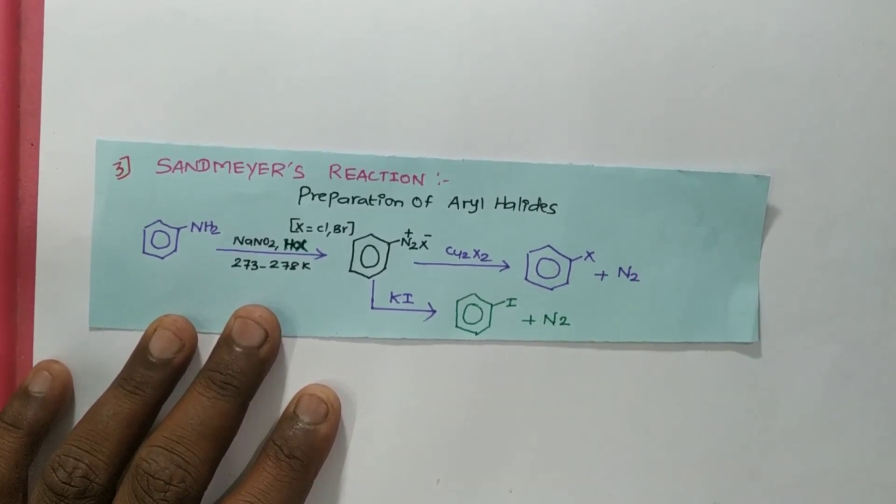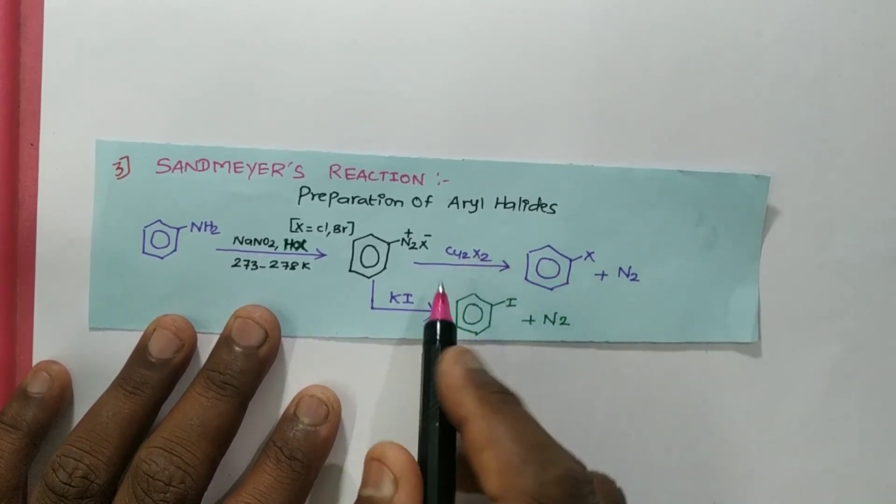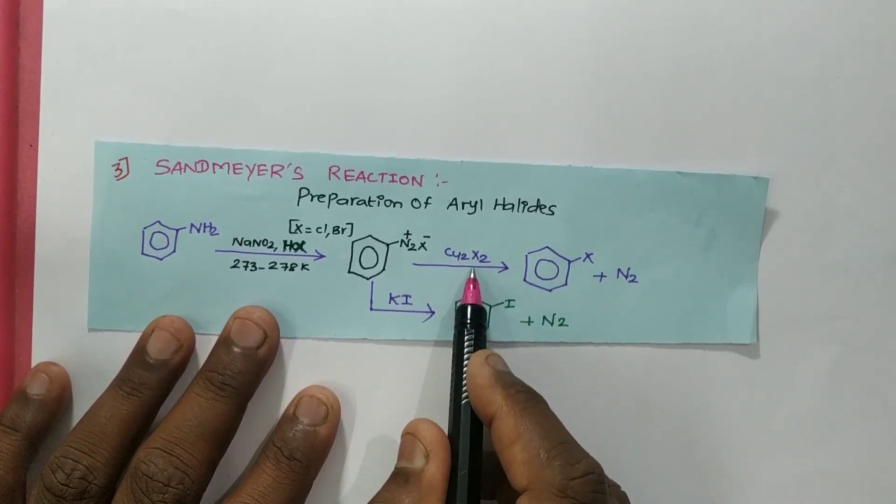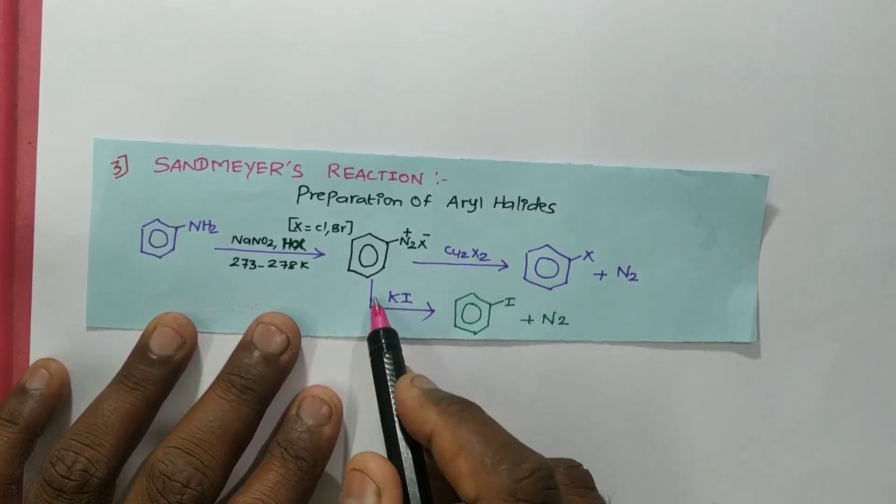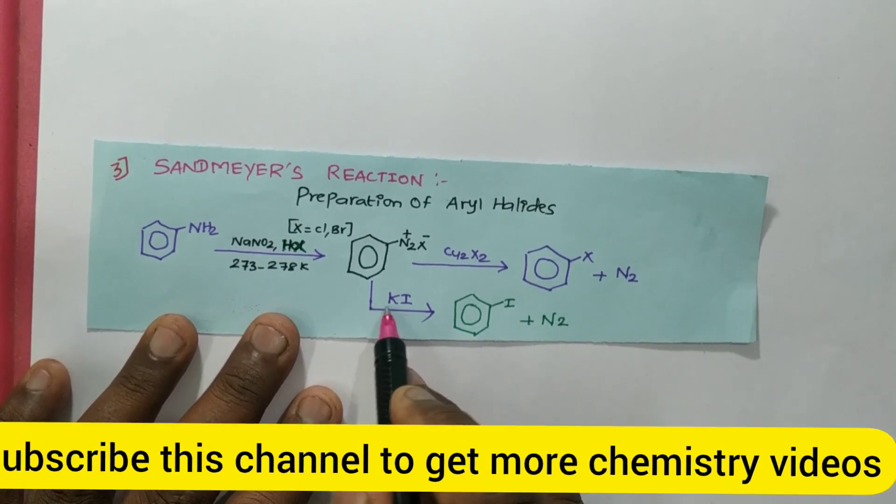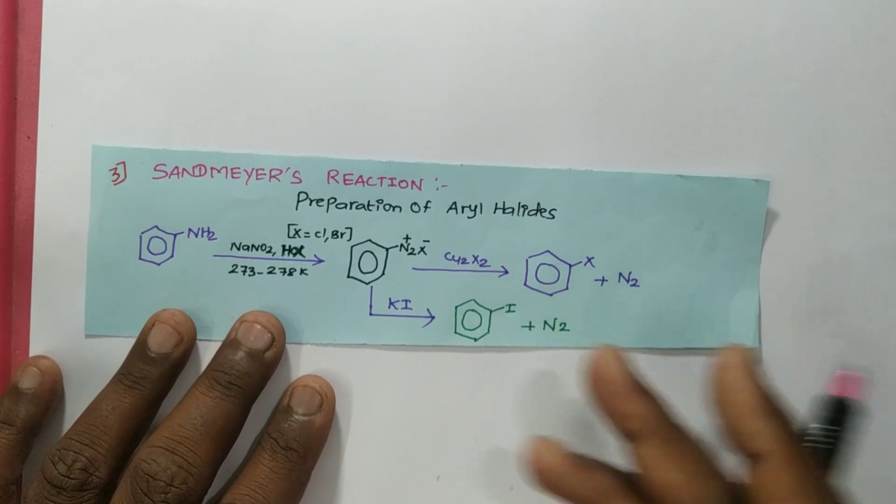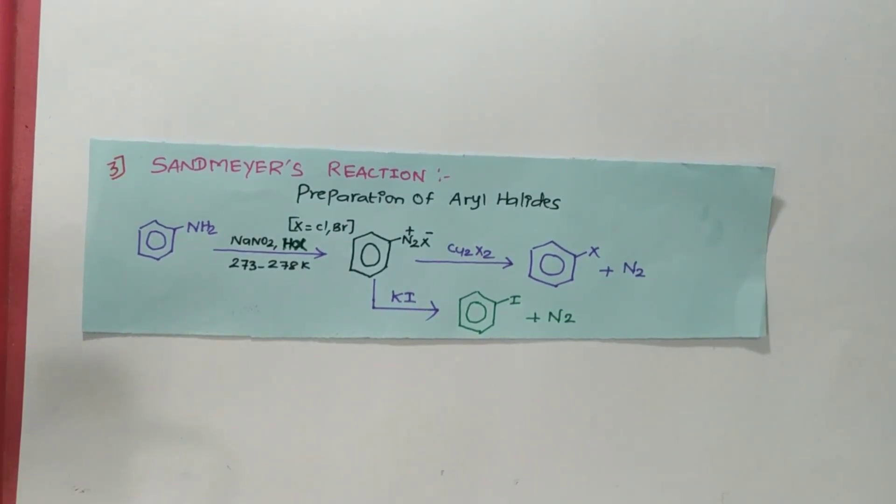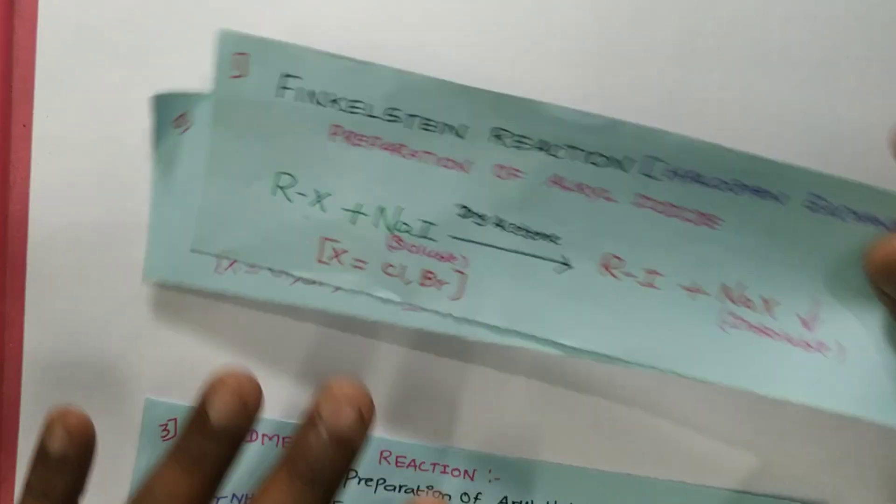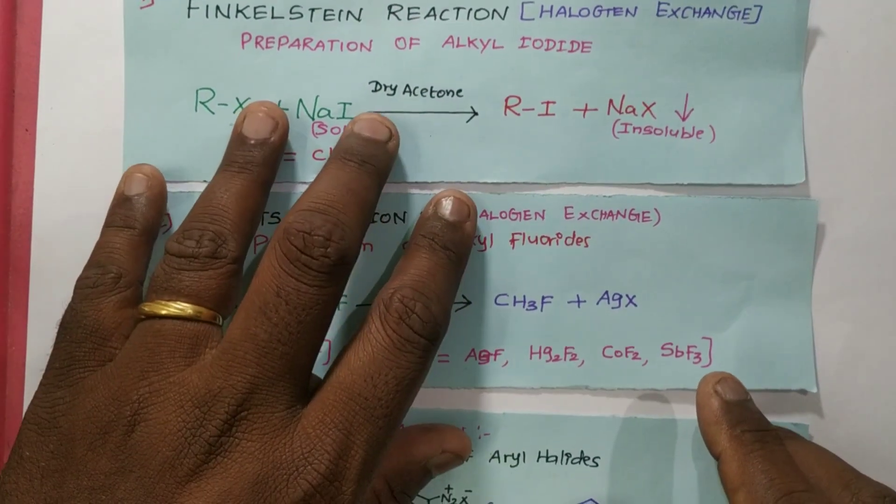If I want to prepare aryl halide like chlorobenzene or bromobenzene, I have to use Cu2X2 as a reactant. If I want to prepare alkyl iodide, I have to react with KI. Then I will be getting these products. I think you understand very well about these three mechanisms. These are very simple reactions: Finkelstein reaction, Swarts reaction, and Sandmeyer reaction.